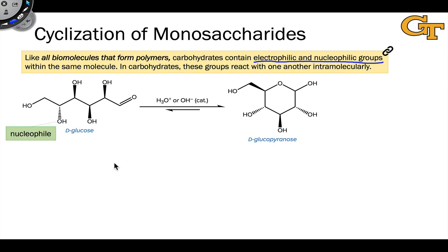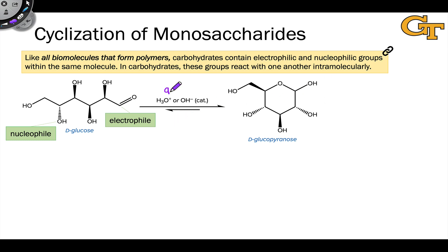Recall that the hydroxyl oxygen is nucleophilic and the carbonyl carbon is electrophilic. The addition of the hydroxyl oxygen to the carbonyl carbon gives rise to a cyclic structure in which there's a new C-O bond, and it looks like a hydrogen has migrated from the hydroxyl oxygen to the former carbonyl oxygen, which now becomes part of a hydroxyl group. This is an addition process in the forward direction, and in the reverse direction, which corresponds to ring opening, this is an elimination process.